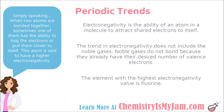The second trend on the periodic table is called electronegativity. Electronegativity is the ability of an atom in a molecule to attract shared electrons to itself. We are talking about two bonded atoms where one has the ability to hog the electrons — pulling them closer to itself. The one hogging the electrons has a higher electronegativity. This trend does not include the noble gases because electronegativity deals with bonded atoms, and the noble gases do not bond.